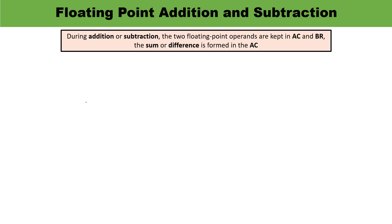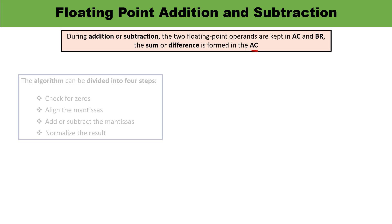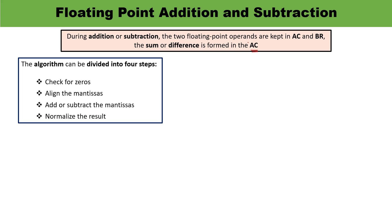For addition and subtraction, the two floating point operands are kept in AC and BR, and the sum or difference is stored in AC. The overall algorithm can be divided into four steps: check for zeros, align the mantissas, add or subtract the mantissas, and normalize the result.